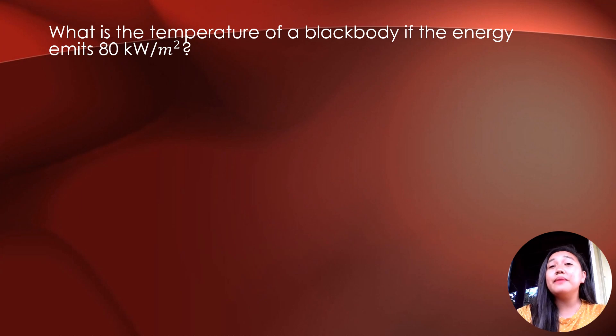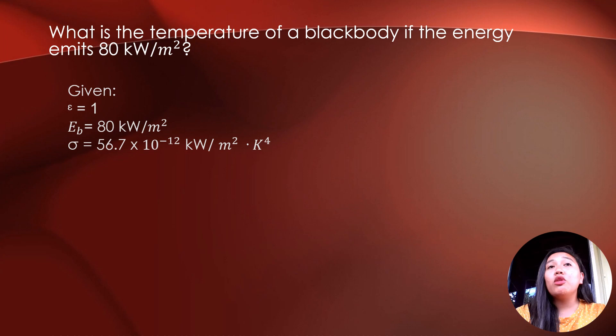So the emissivity of a blackbody is equals to 1. The given in this problem are emissivity equals 1 because it is a blackbody. The emissive energy of a blackbody is equals to 80 kilowatts per square meter. We have a Stefan-Boltzmann constant which is equals to 56.7 times 10 raised to negative 12 kilowatts per square meter times Kelvin raised to 4.